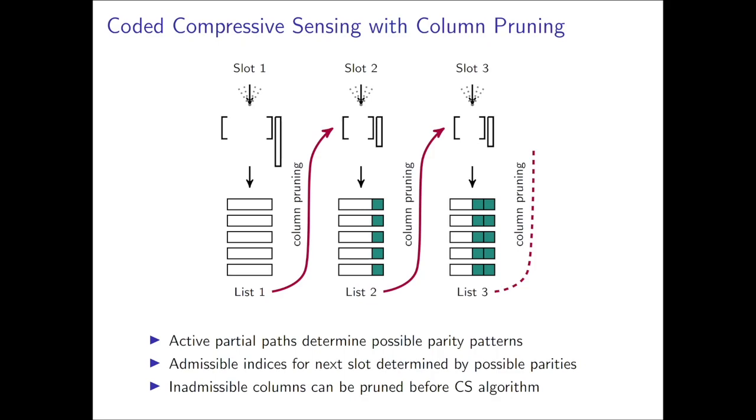When we presented the architecture for the coded compressed sensing scheme, we essentially viewed compressed sensing solver as acting independently from slot to slot. It turns out that the decoding on the first slot and the recovered fragments can inform the decoding of the second slot. Once the first two slots are decoded, this information can also be used in the decoding of the third slot. This arises because the parity patterns of the fragments that are recovered in the early slots determine the set of possible messages for the subsequent slots.